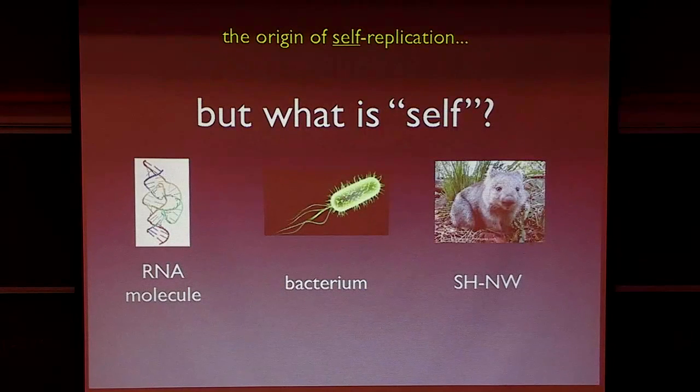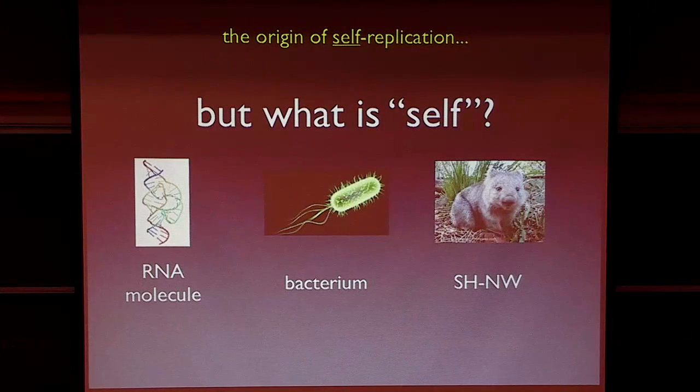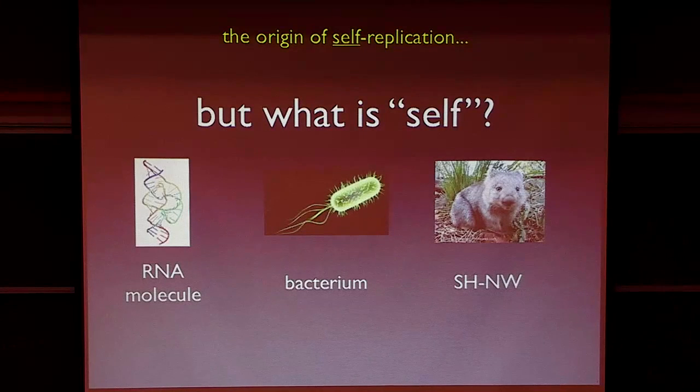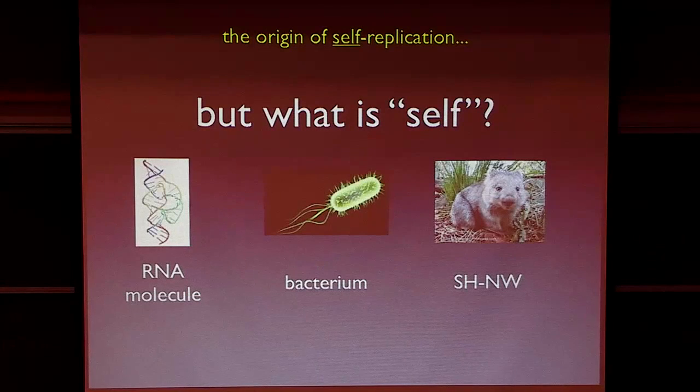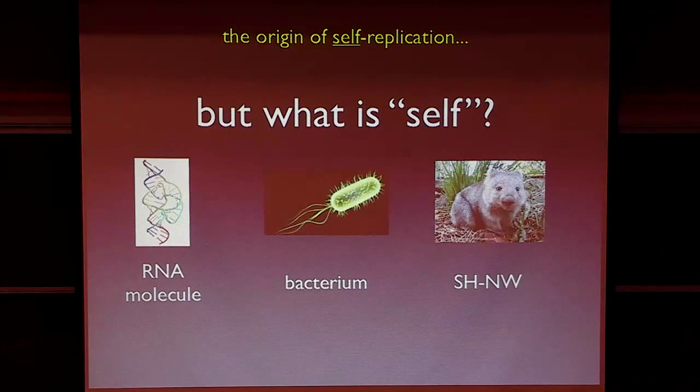So it's easy to figure out what self is in some kind of living system, such as my favorite organism here, the southern hairy-nosed wombat. It's very clear what a self is and what a non-self is. And it's probably reasonably clear in a bacterium.